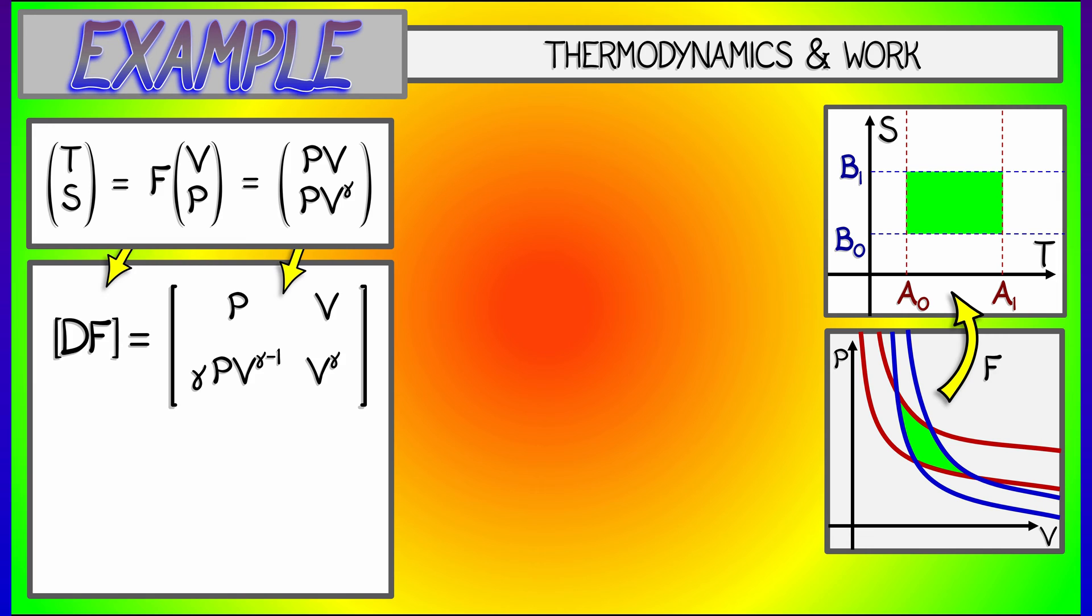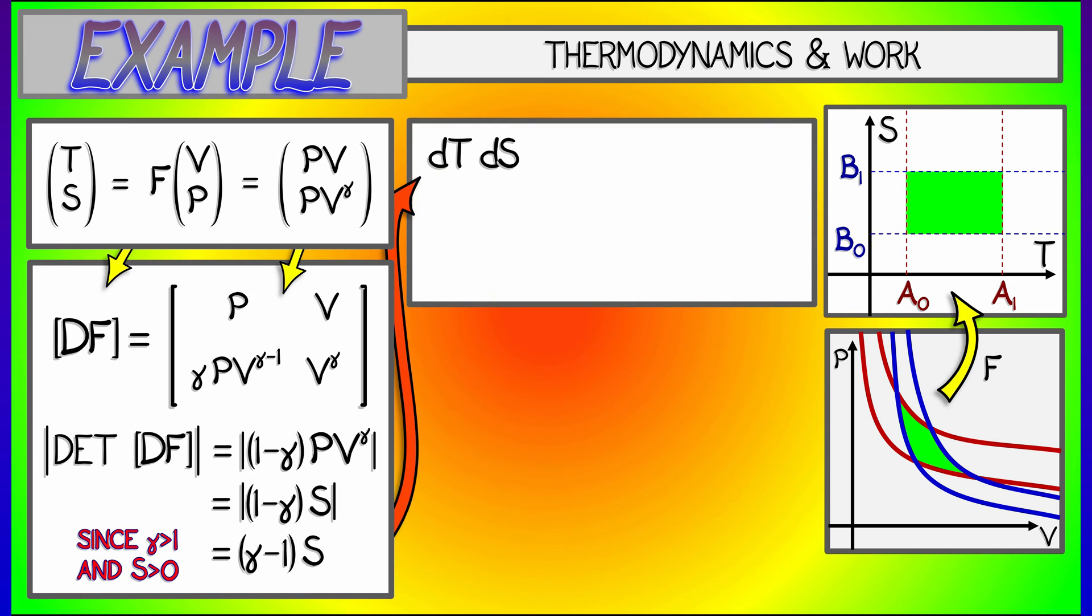Now, taking the determinant of this gives me, let's see, PV to the gamma minus gamma times PV to the gamma. That's 1 minus gamma times PV to the gamma. But don't forget the absolute value. Now, the first thing I notice is that PV to the gamma is the same as S. And to take care of that absolute value, I need to recall that gamma is bigger than 1. And so, I can drop the absolute value signs, but I need to switch and look at gamma minus 1.